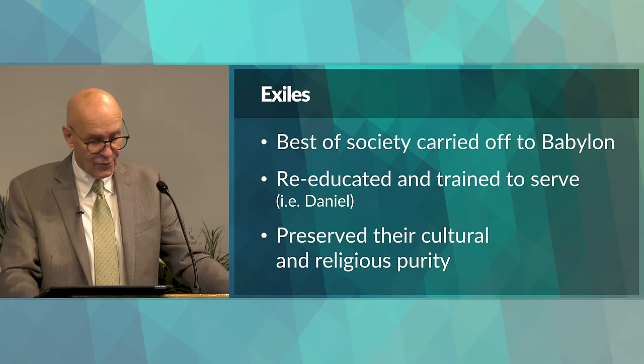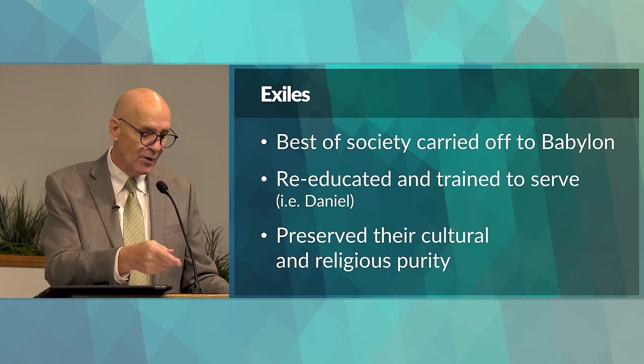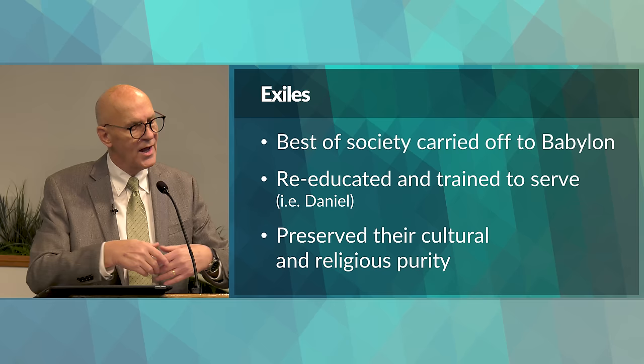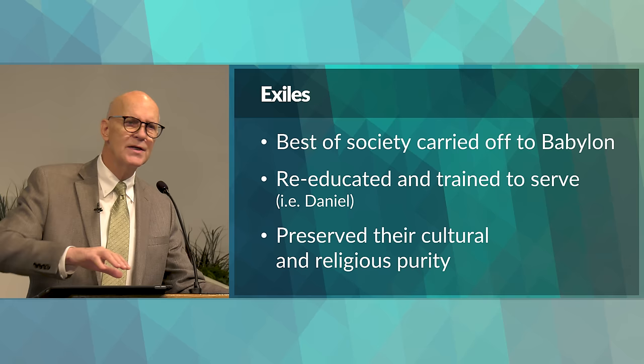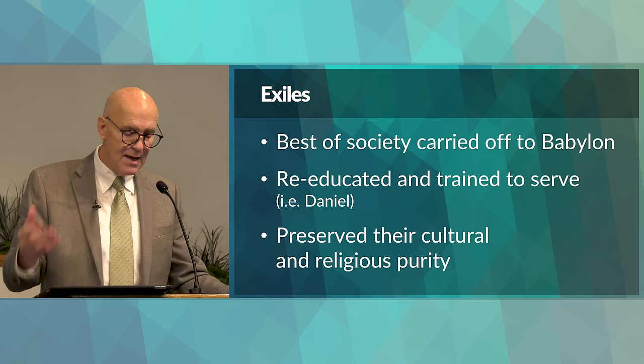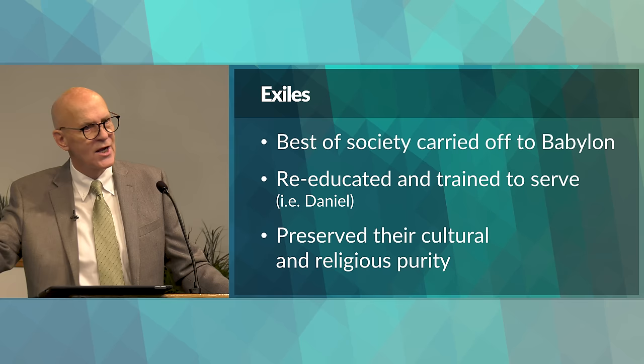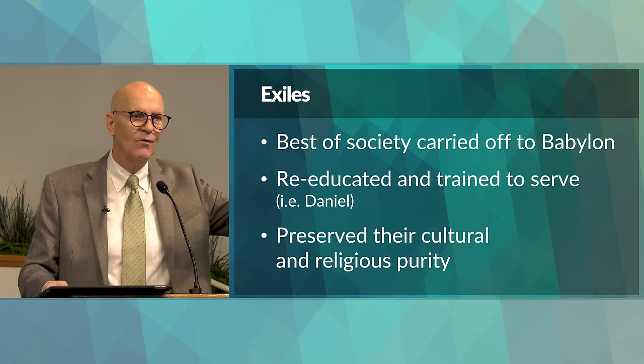We see an example of their method when we read the story of Daniel — Daniel and his three friends were educated, fed, trained, and eventually put to work on behalf of the empire. The fact that the Babylonians did this enabled the Jewish exiles from the Southern Kingdom of Judah to maintain their culture and religion even while living in exile — something the Northern Kingdom people were not permitted to do.